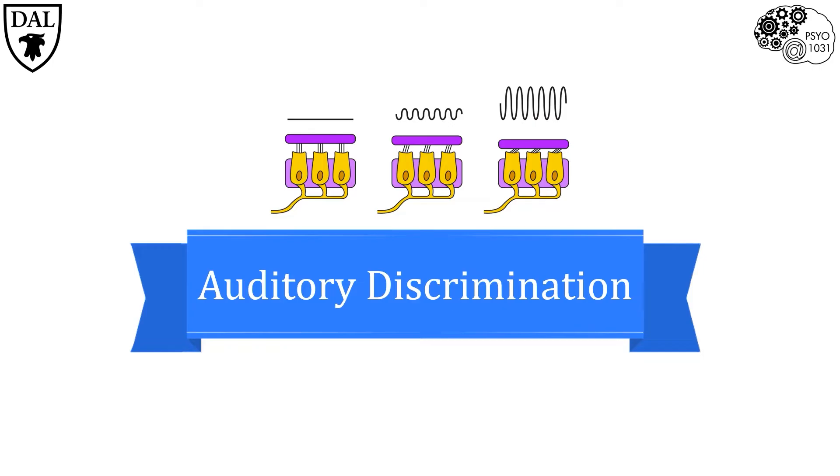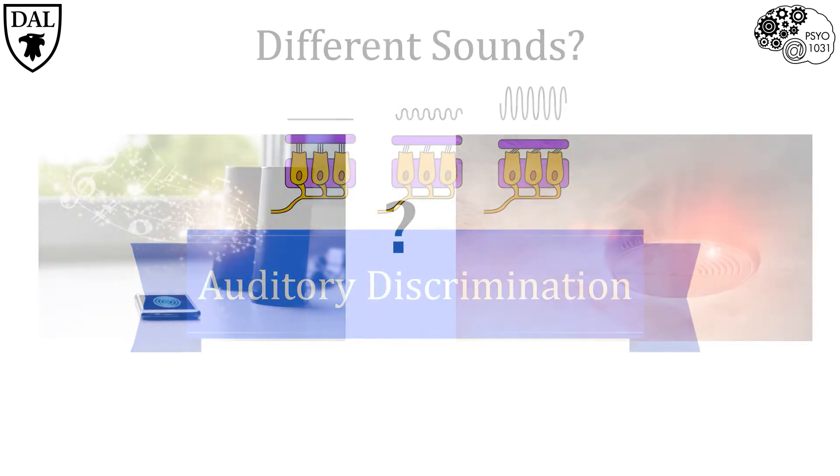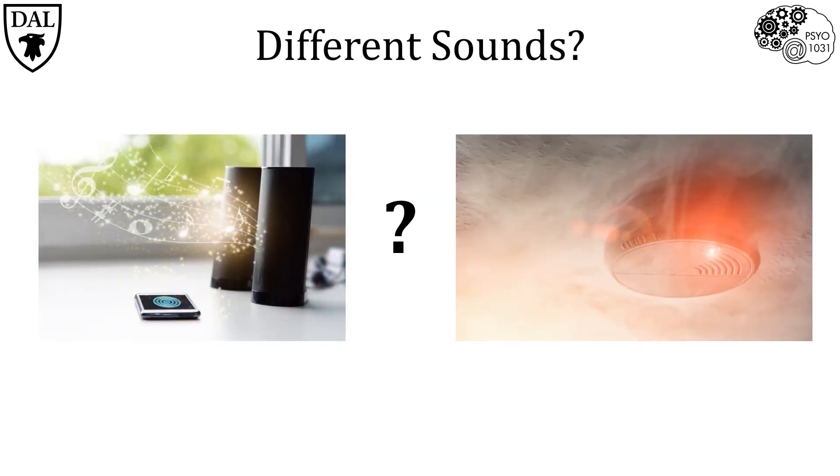Beyond detecting sound, how is it that we can detect different types of sound? How are we able to distinguish between the vast collection of sound waves we encounter throughout our lives? What allows us to distinguish between a pop song on the radio and our smoke detector alarm? At least in part, the answer lies in the cochlea.